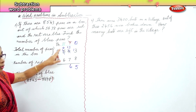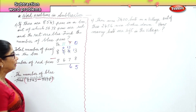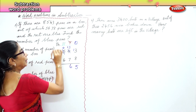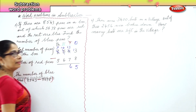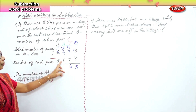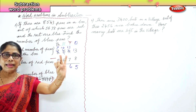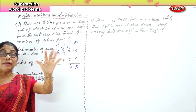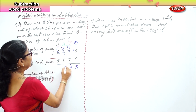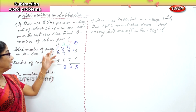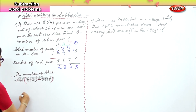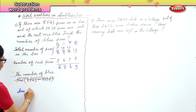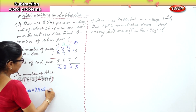Now we have four hundreds take away six hundreds. Six is bigger than four, so we borrow one from the thousands. Eight thousands becomes seven. That gives us fourteen hundreds — take away six: after six, seven, eight, nine, ten, eleven, twelve, thirteen, fourteen — fourteen take away six is eight. Then seven thousands minus five thousands is two. So your answer is two thousand eight hundred and sixty-five blue pens.